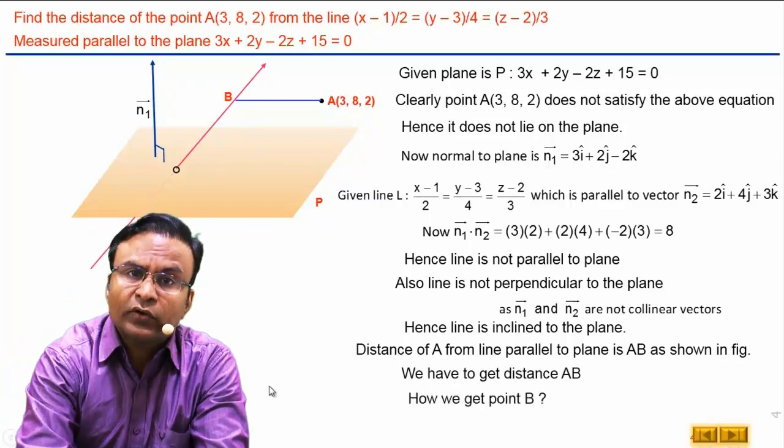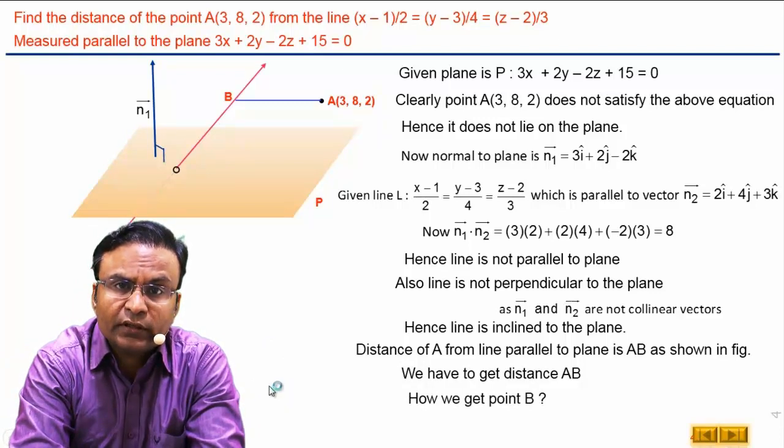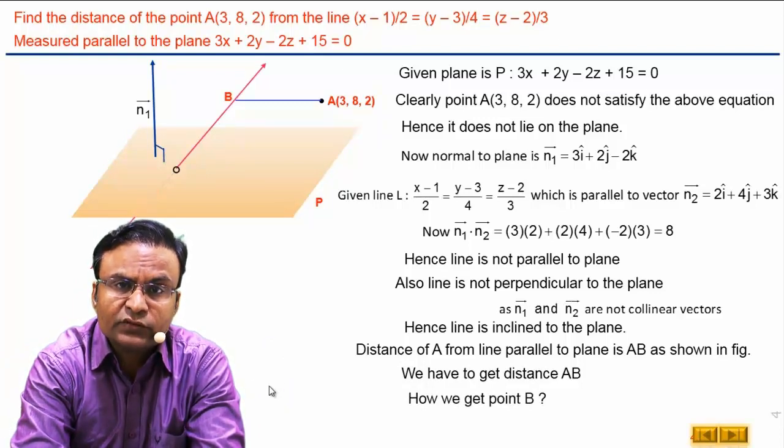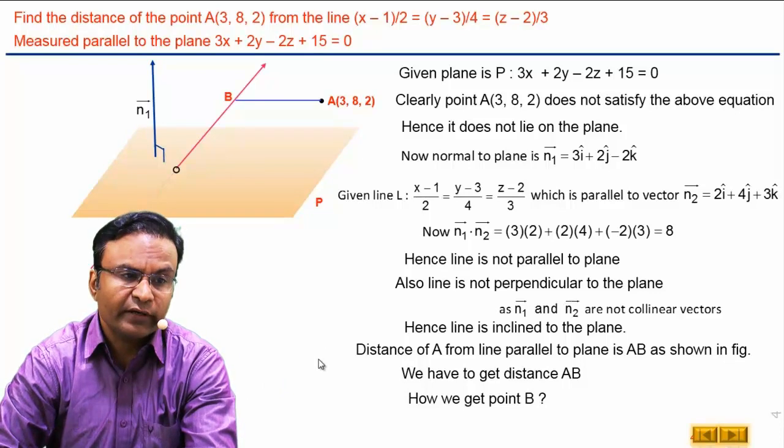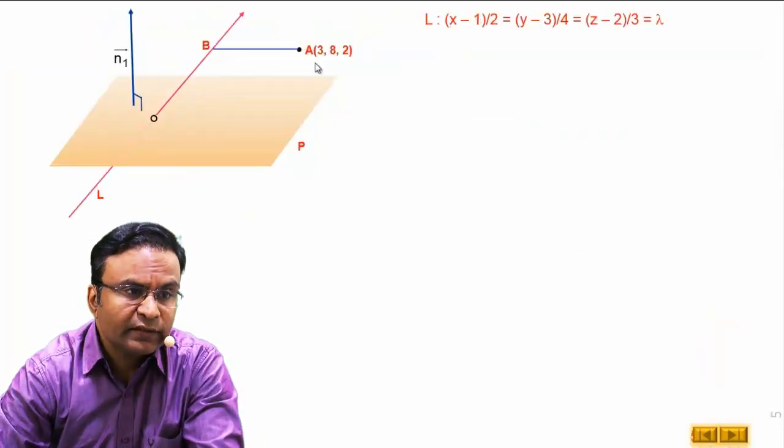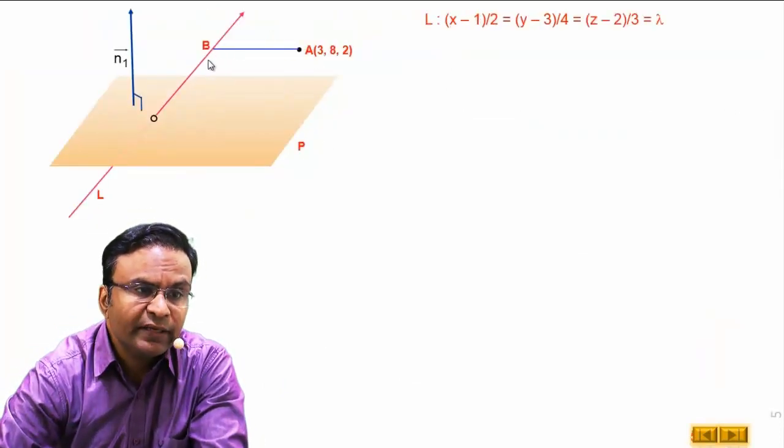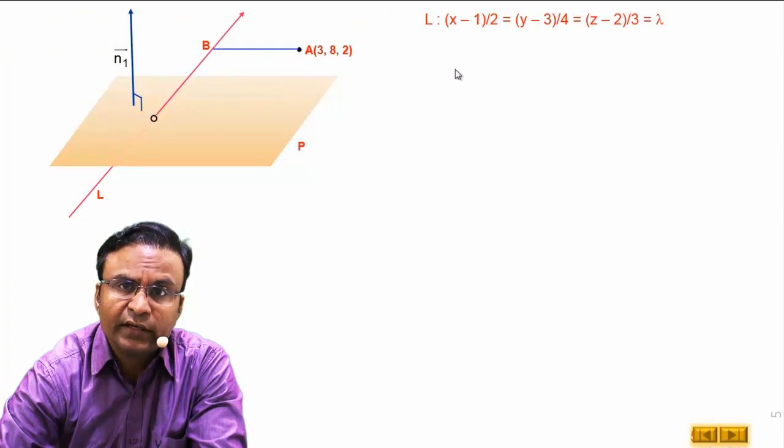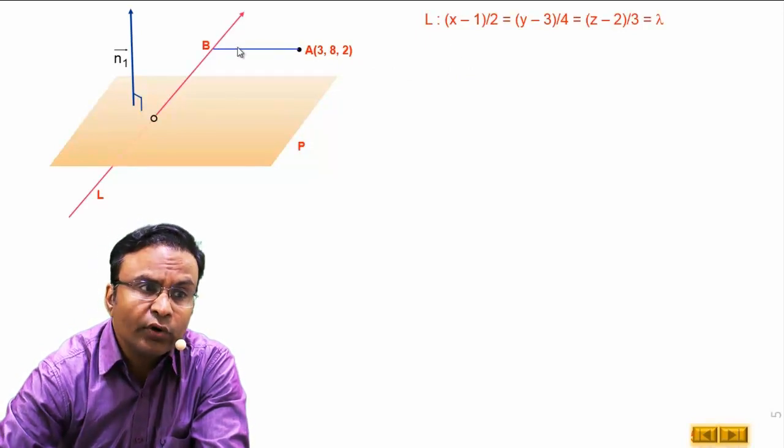How we get coordinates of point B? Our task is to find the coordinates of point B. In this diagram, point B is lying on this straight line L.